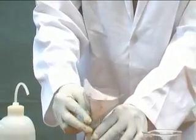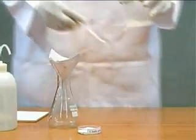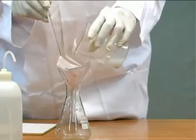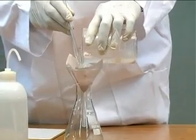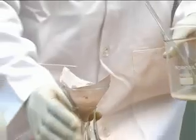The funnel is placed on top of a conical flask, and then the solution is poured with the help of a glass rod. This is done to prevent dripping of the solution through the sides of the beaker.